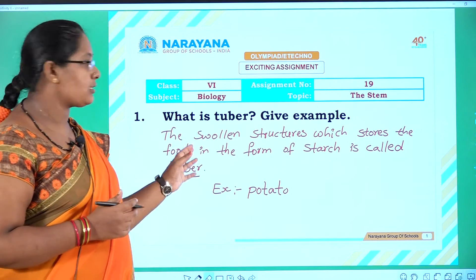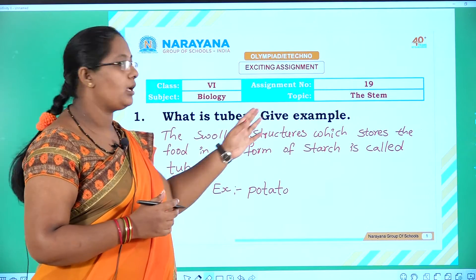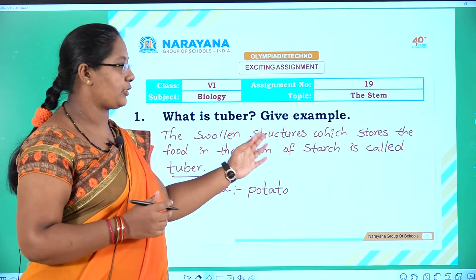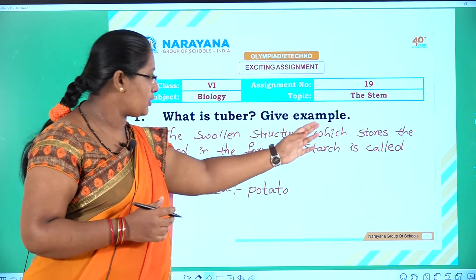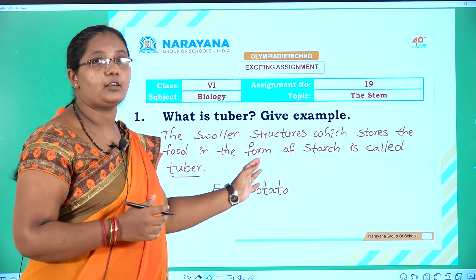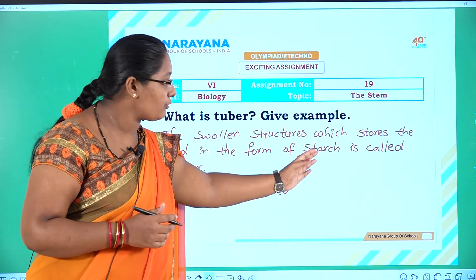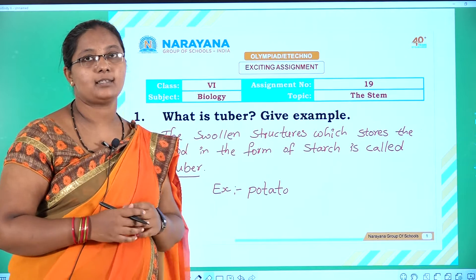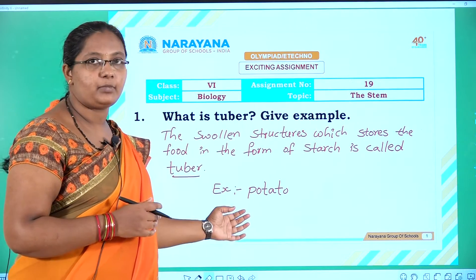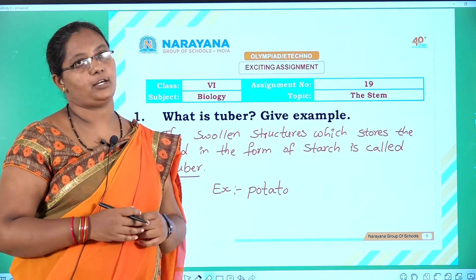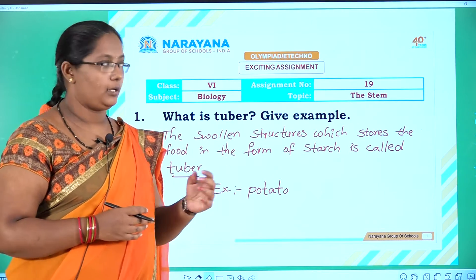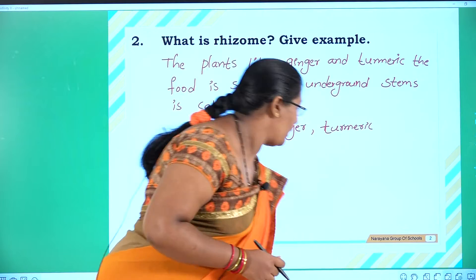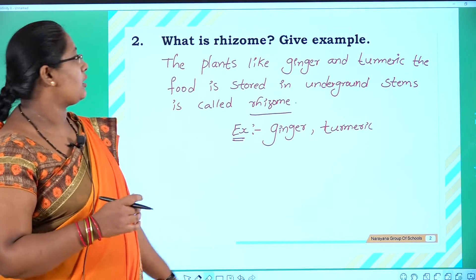First question: What is a tuber? Give examples. The swollen structures which store food in the form of starch are called tubers. The example is potato.